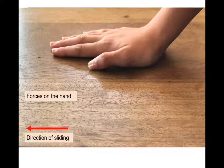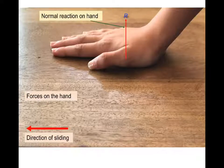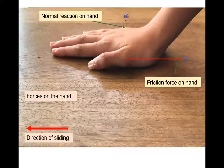We'll look at the forces on the hand. There will be a normal reaction on the hand. If you place your hand on the table and push down, you always feel a force moving upwards in your hand. And then also as she's trying to push it forward, you will get a frictional force acting in the opposite direction. So these are the forces on the hand.